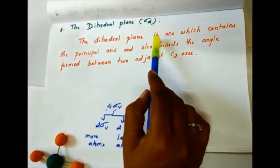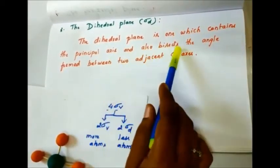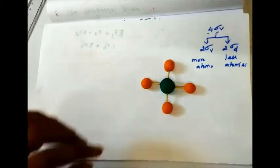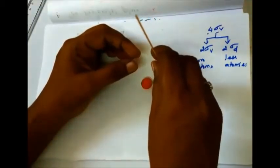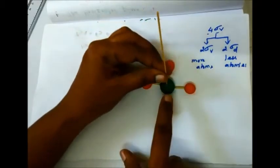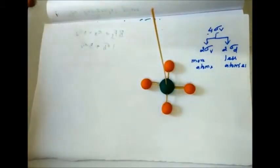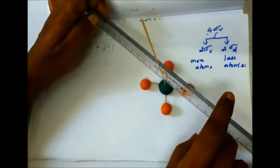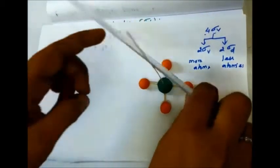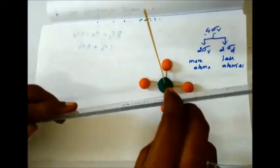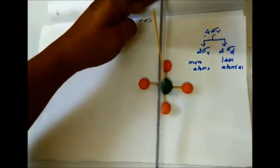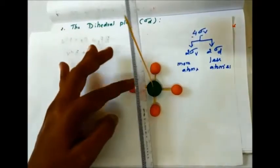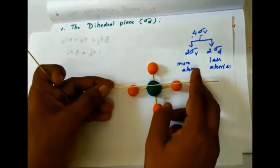The dihedral plane is one which contains the principal axis and also bisects the angle formed between two adjacent C2 axes. For PtCl4, this is the principal axis. There are 4 sigma v planes, and the principal axis contains 2 C2 axes.